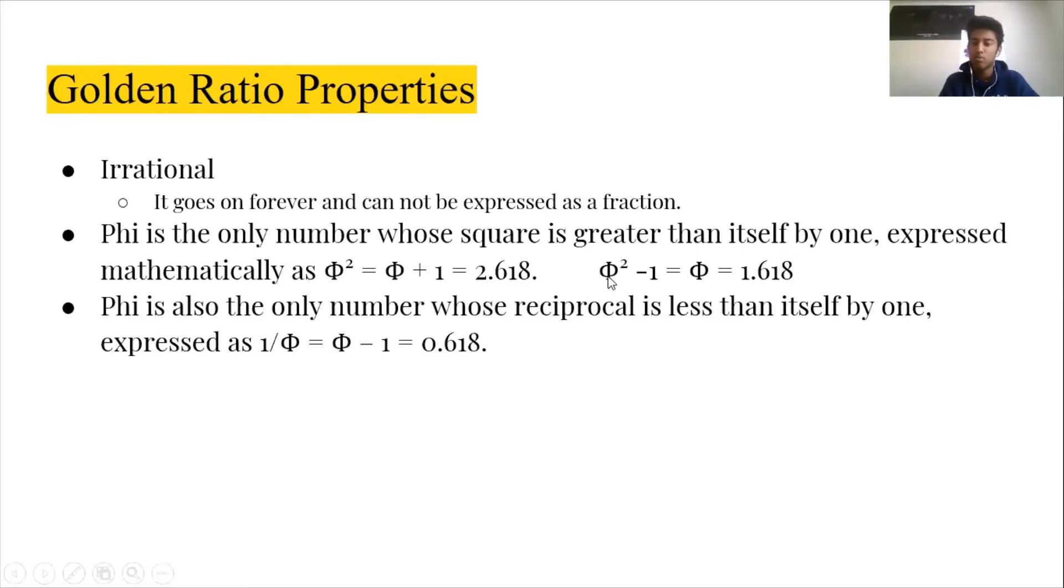For example, in this first property right here, we can see whether, let's say we plug in four instead of phi, and we square it, and we subtract one, and we get 16 minus one, which is equal to 15. And you can see that's not equal to four. But when we plug in phi instead, it's phi squared minus one is equal to phi itself.